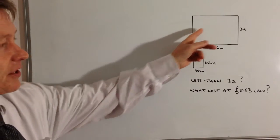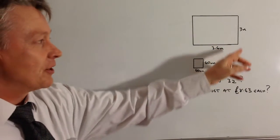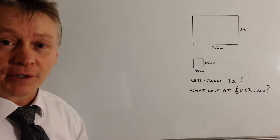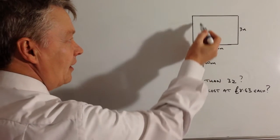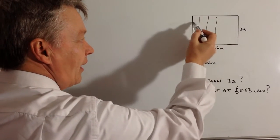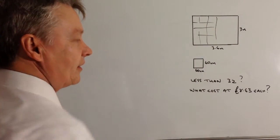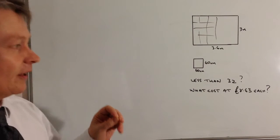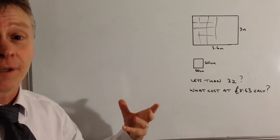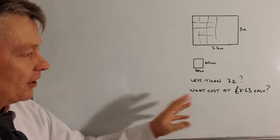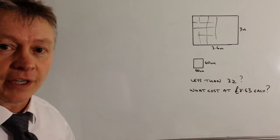We've got a chap who's got a garden which is three metres by 3.6 metres and he's going to put these paving slabs onto the garden to make a nice pattern. The two questions we've got are: he's got 32 of them, so is that going to be enough for him, and also what's the cost for the 32 that he's bought?